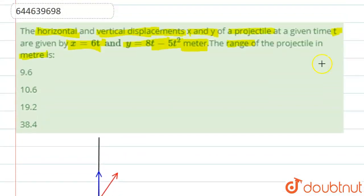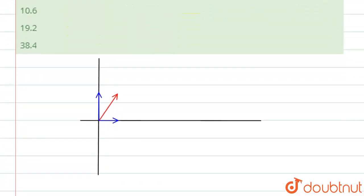So over here, it's given that these components are this and this. The position components are x = 6t and y = 8t - 5t². So if you see properly, the projectile will execute somewhat motion like this.